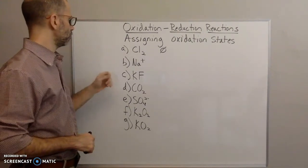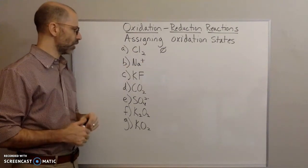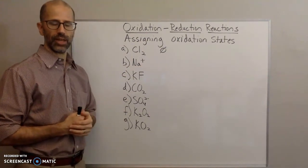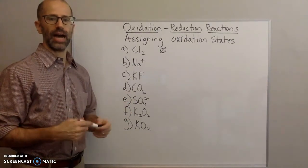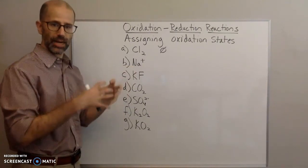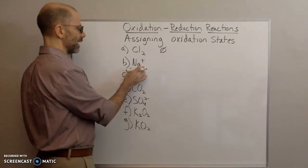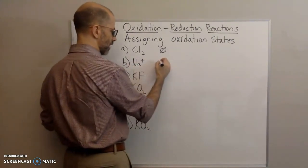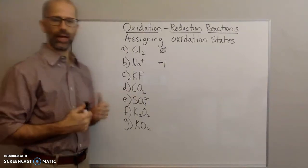For B, we have the metal sodium and it has a plus charge. According to rule number two, the oxidation state for monatomic ions is the same as the charge on the ion. We're talking about ions by themselves — not ions as part of a compound, that's different. The ion here, sodium, has a one plus charge, so the oxidation state is going to be plus one.